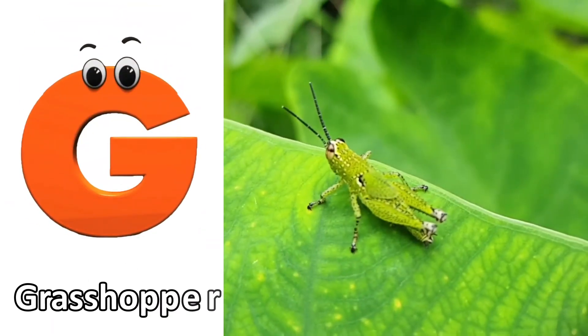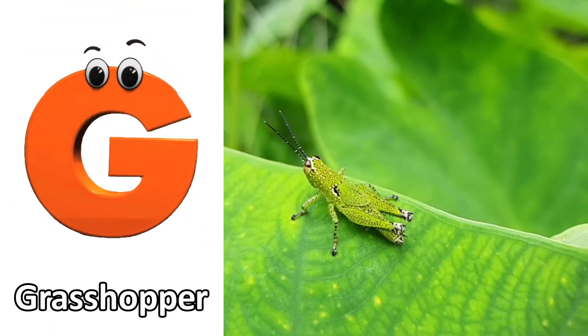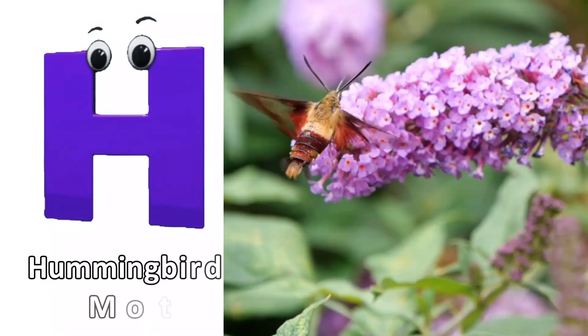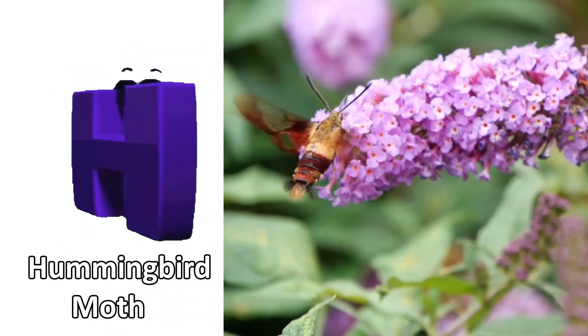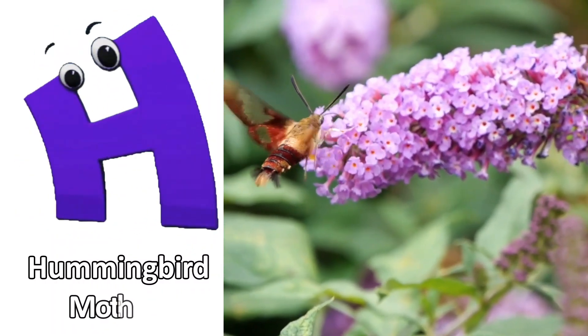G is for Grasshopper. G, G, grasshopper. H is for Hummingbird Moth. H, H, hummingbird moth.